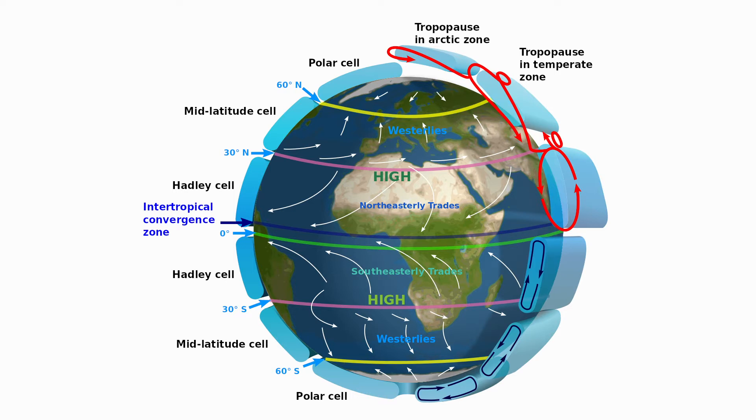In each hemisphere there are three cells — the Hadley cell, the Ferrel cell, and the Polar cell — in which air circulates.